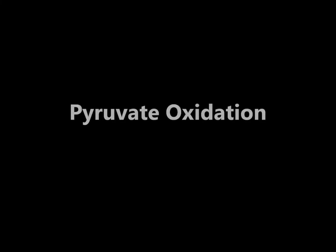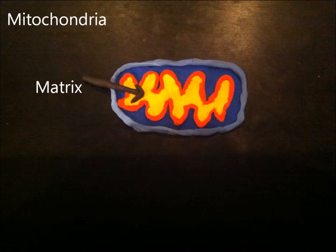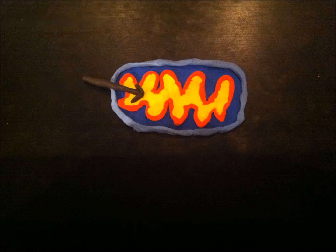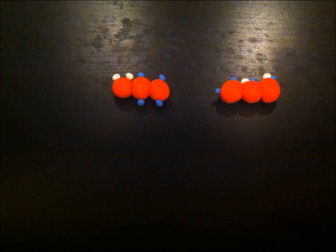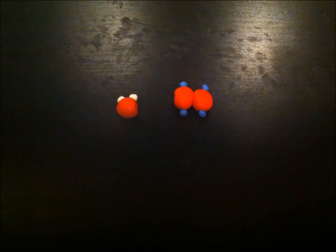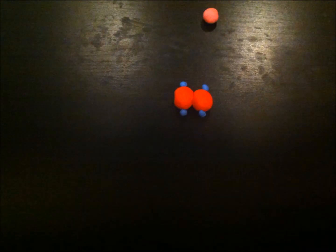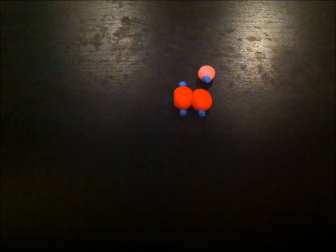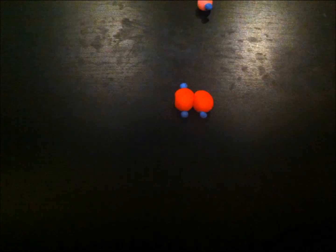Next is pyruvate oxidation. This occurs in the mitochondrial matrix where the pyruvate is transported. Since there are two pyruvate molecules, this process will happen twice. So only one pyruvate will be shown. Carbon dioxide is cleaved off. NAD-positive is reduced to produce NADH. Coenzyme A binds with the two carbon molecule to produce acetyl coenzyme A.